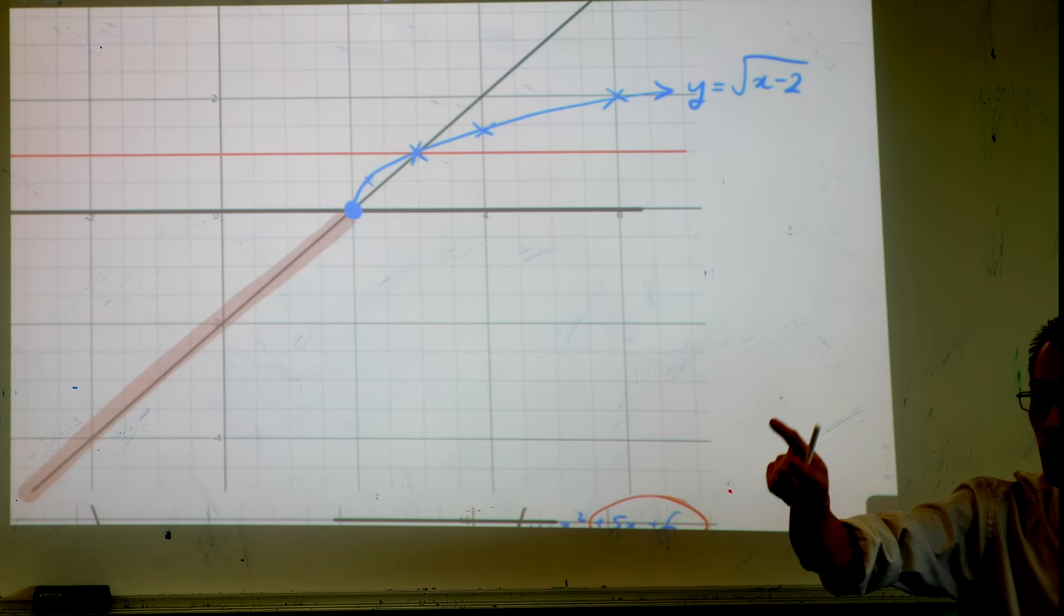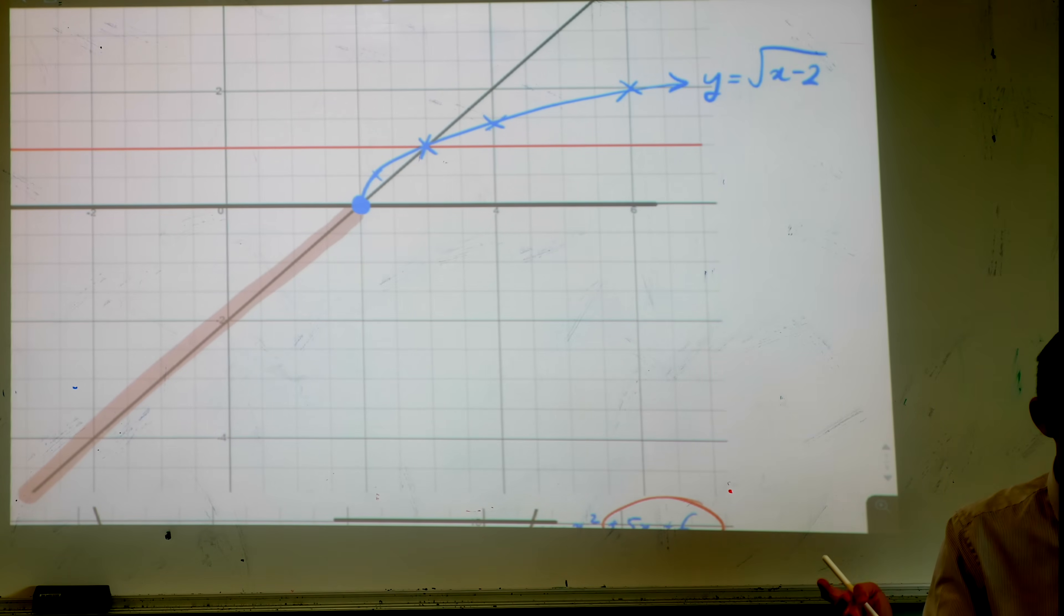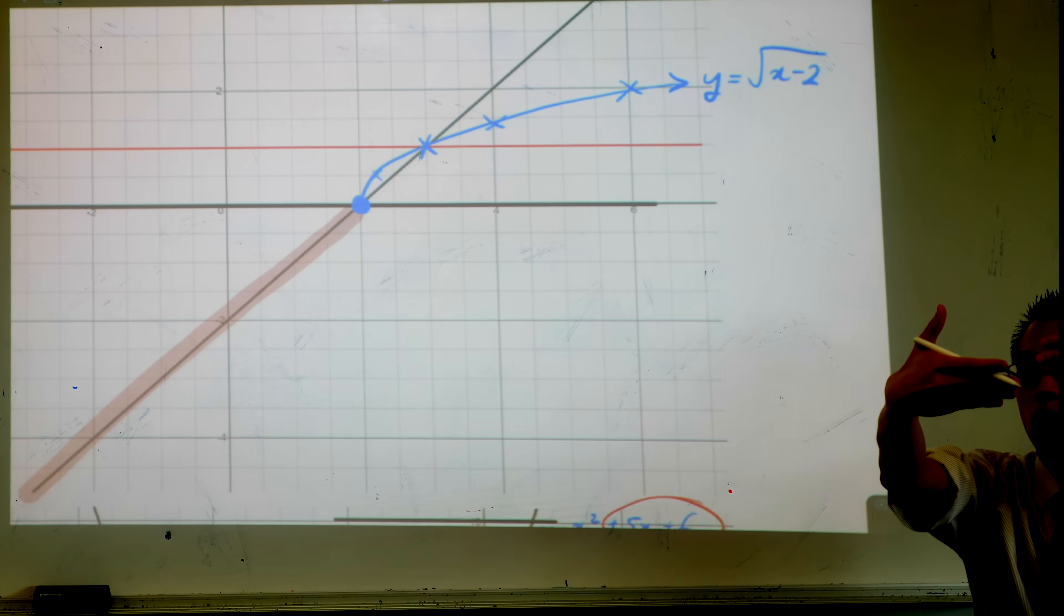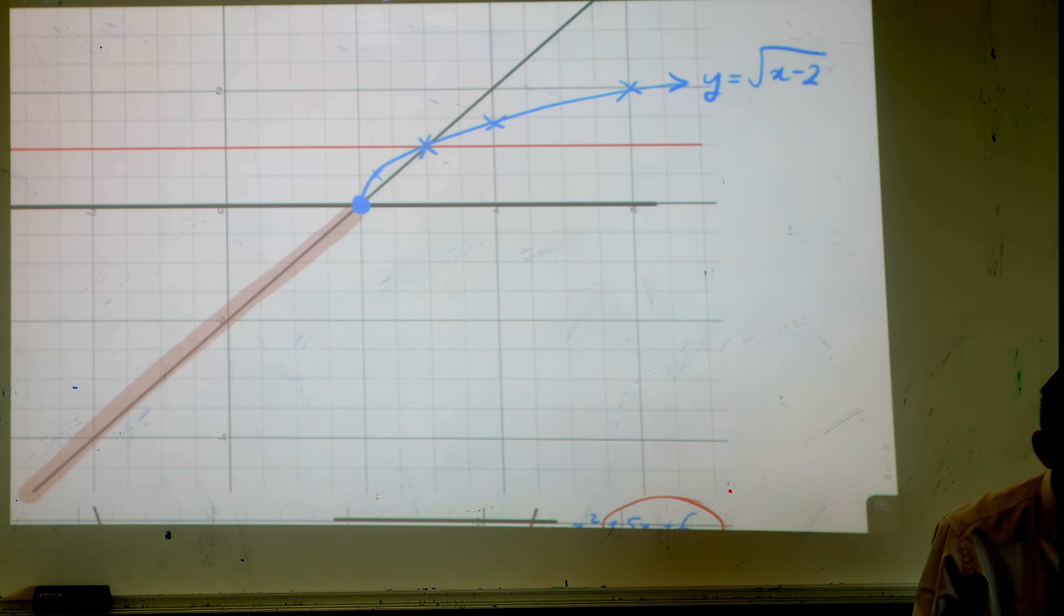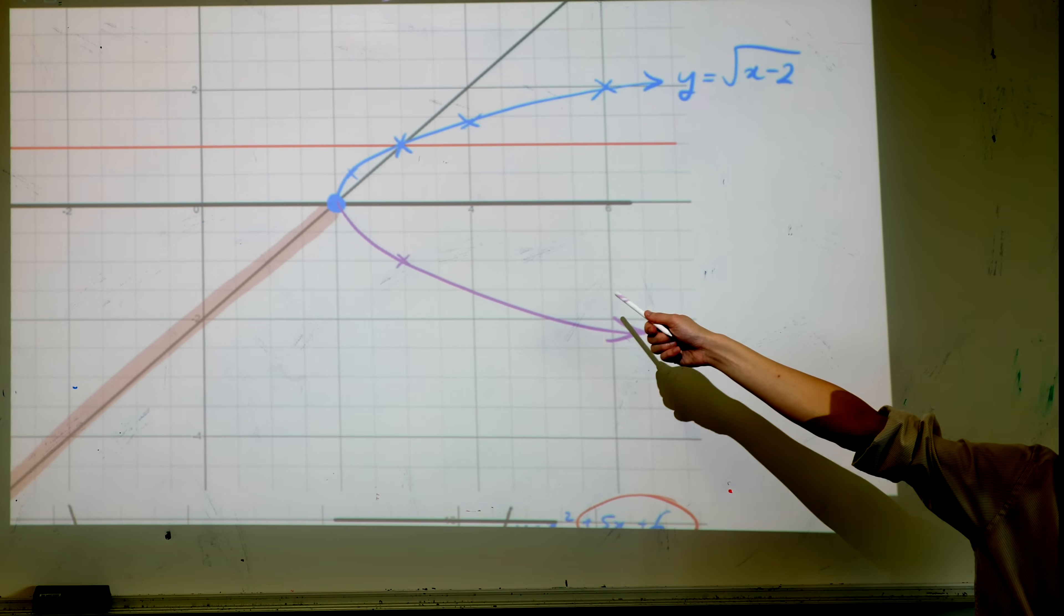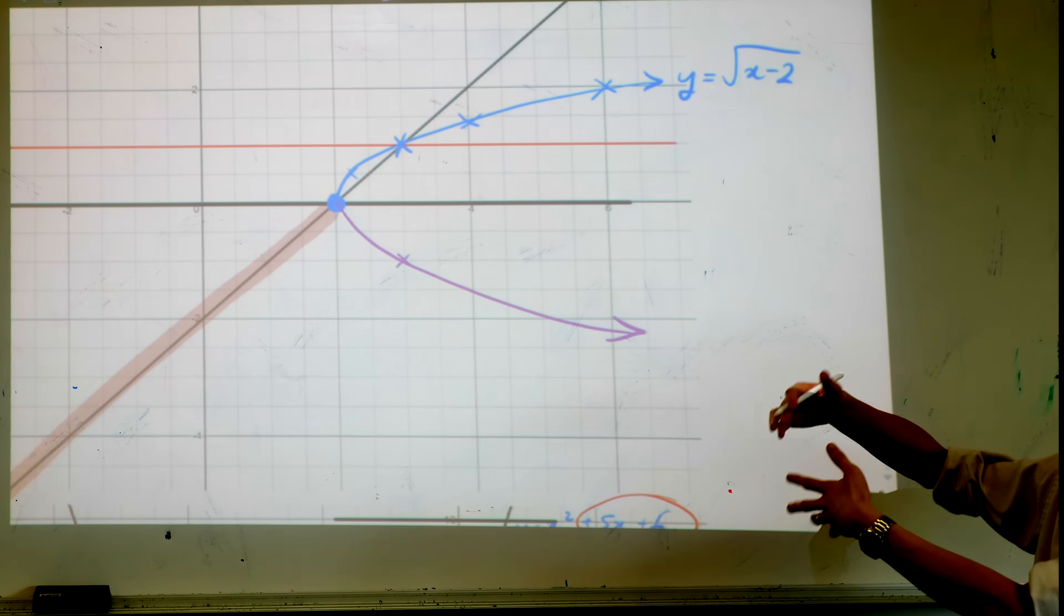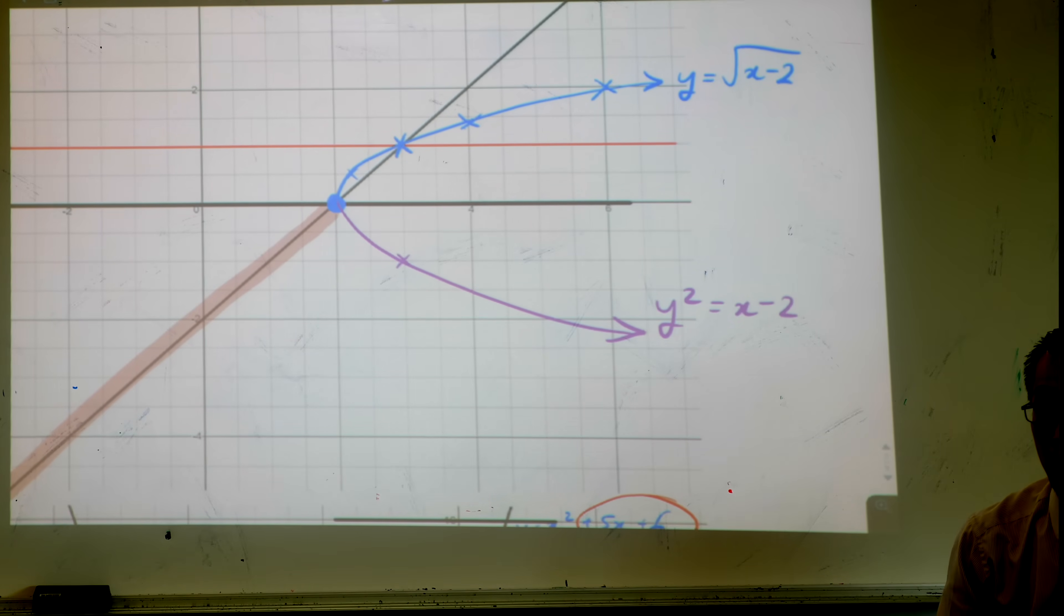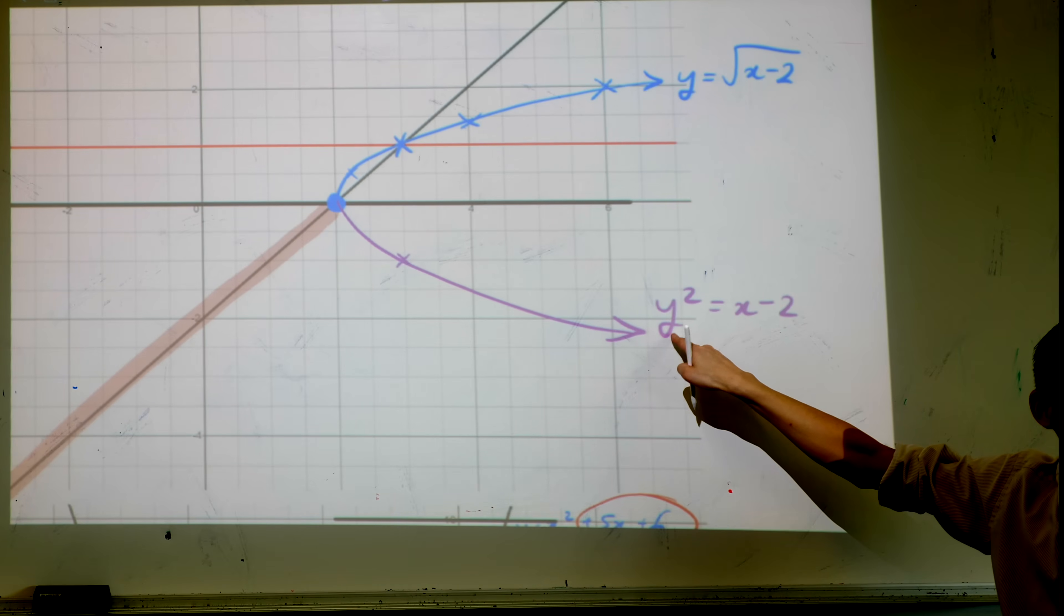Now think back to yesterday morning we did reflections. What is minus of this? It's flipped on the x axis. It's flipped across the x axis, it's underneath. So can you go ahead and do your very best and draw the same thing but draw it upside down. It's going to go down like that. Like a parabola. That's a parabola, it's the whole thing. Which shouldn't surprise you because it's a y squared. This is y squared equals x minus 2. It's a parabola, it's just the other way around.